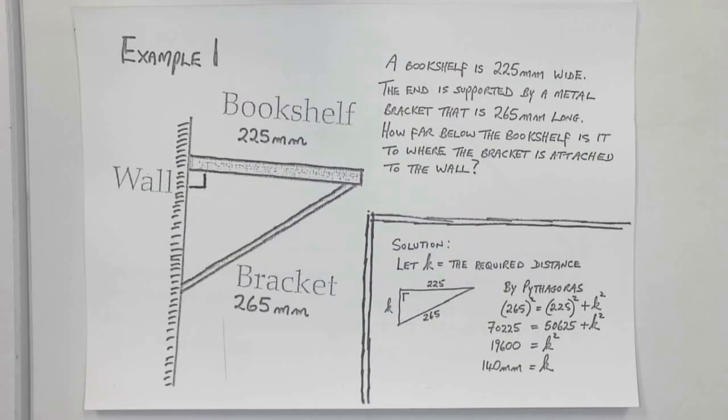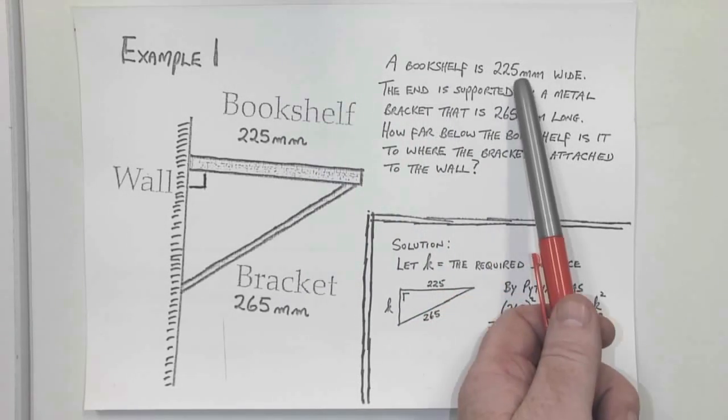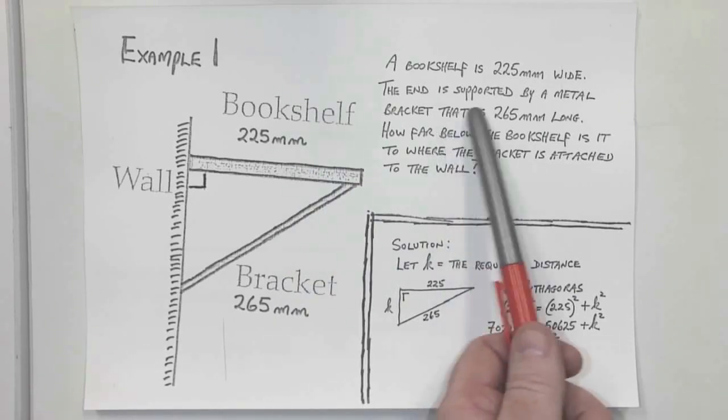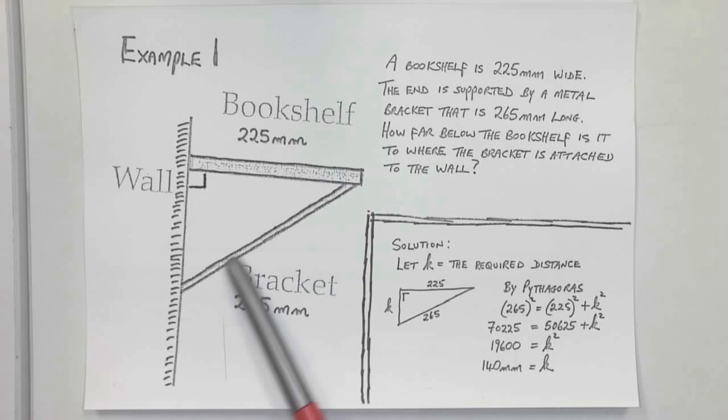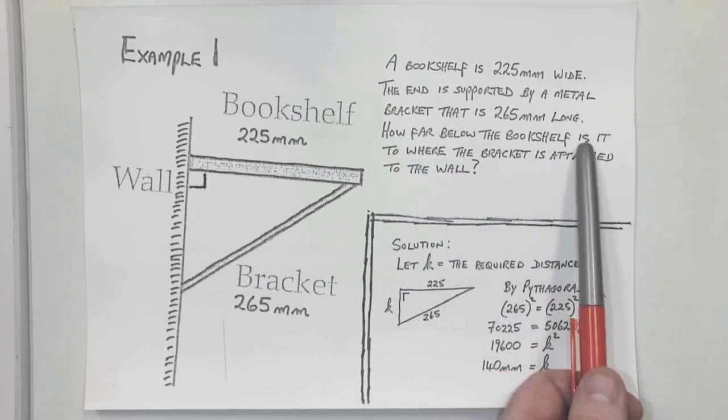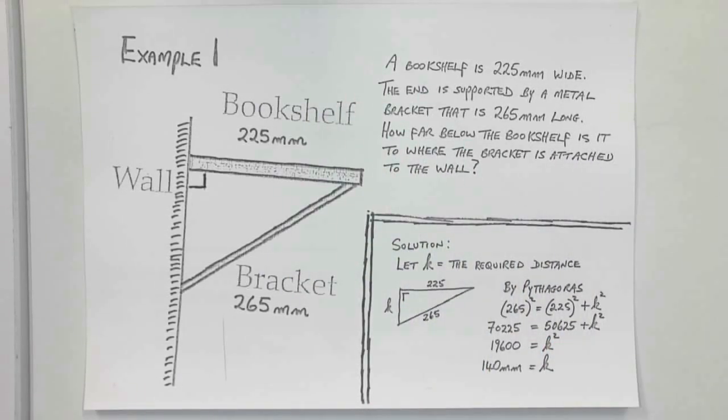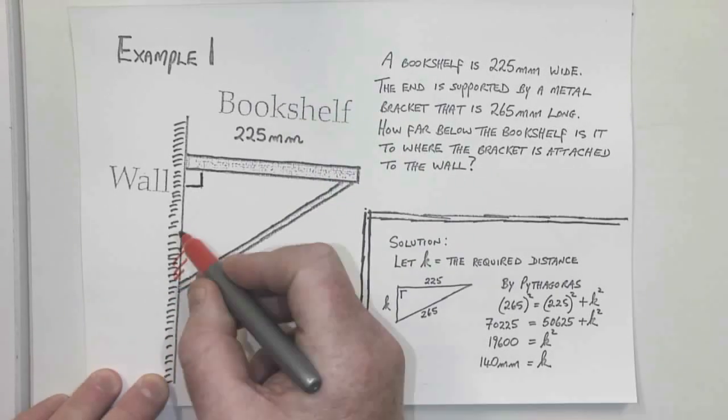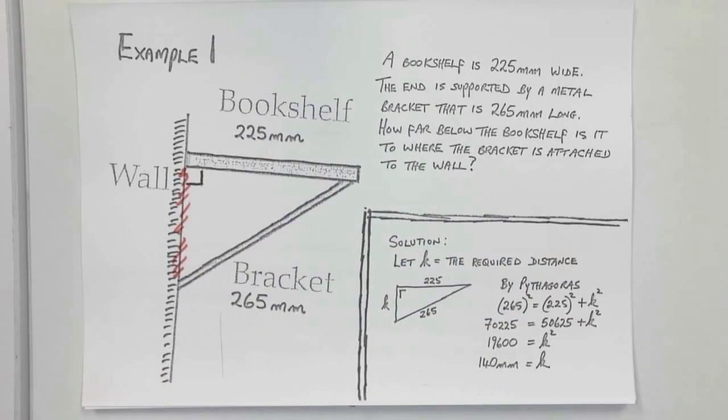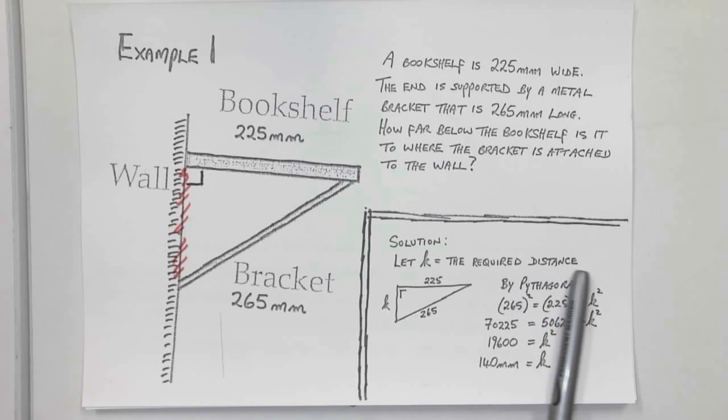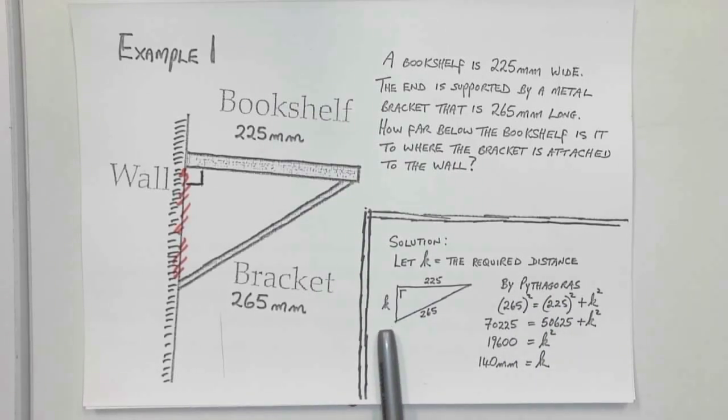What I've got here is just a straightforward simple example that you would be well familiar with. A bookshelf is 225 millimeters wide. The end is supported by a metal bracket that is 265 centimeters long. How far below the bookshelf is it to where the bracket is attached to the wall? So you're looking for this distance here.